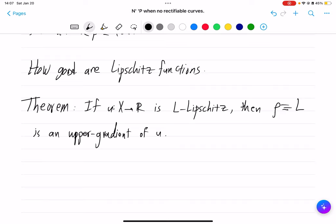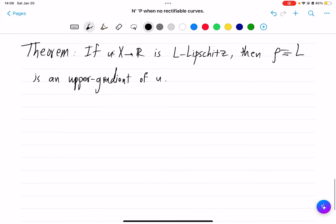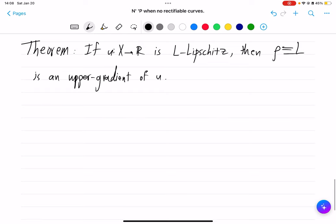Recall that the notion of upper gradient does not require any measure. At this point we don't even have a measure specified on the metric space X. The upper gradient, not weak upper gradient, is a completely metric object. And of course this is a Borel function. So let's prove this and then see what this means about Lipschitz functions belonging to Sobolev class.